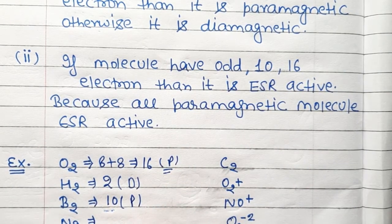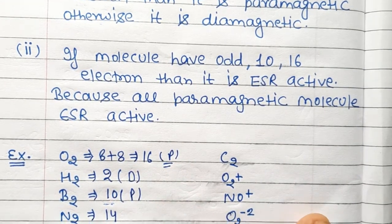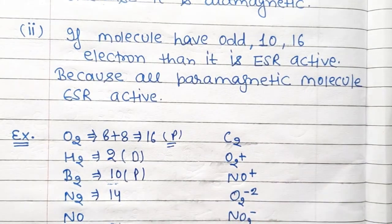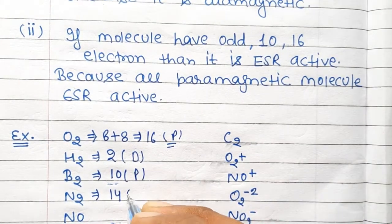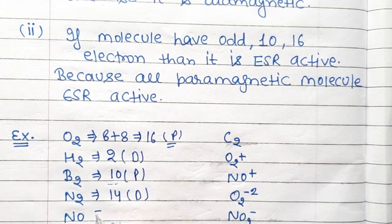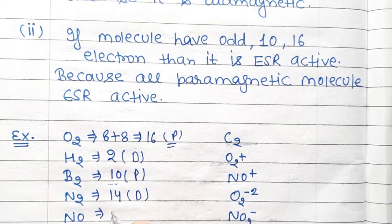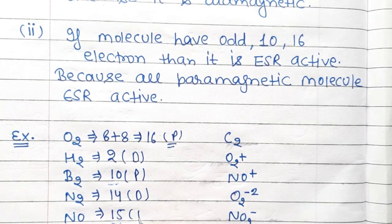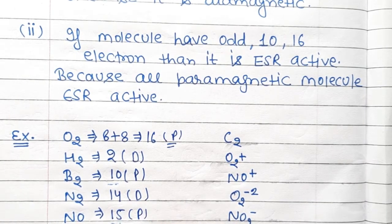For N2: it has 14 total electrons, so it is diamagnetic in nature. For NO: NO has 15 electrons, so it is paramagnetic in nature.